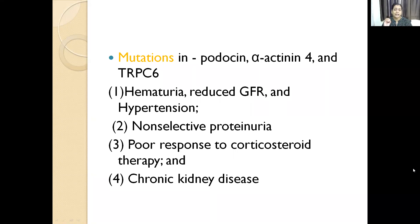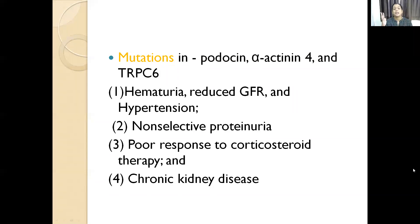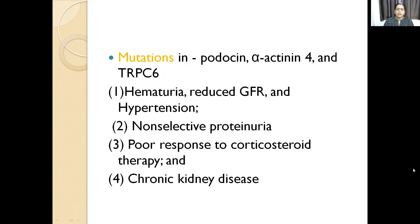As I told you while explaining the slit diaphragm and the epithelial foot processes: the integrity of the visceral epithelium of the podocytes is maintained by nephrin, which is an extracellular molecule bound by the intracellular podocin and actin filaments. If there is a mutation in podocin, alpha-actinin-4, or TRPC6, there will be epithelial cell damage — and because of that epithelial cell damage, there will be proteinuria.